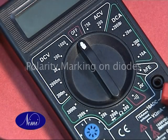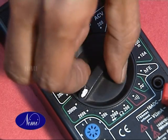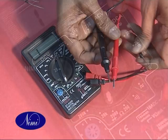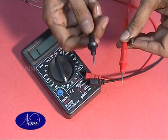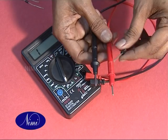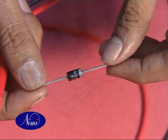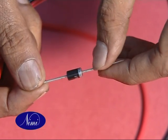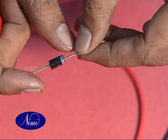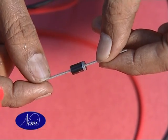For checking diodes, set the meter at the diode symbol 2000. The black probe is negative, the red probe is positive. With this we test the diode. In a diode, the ring indicates cathode, which means negative. The other side is positive, that is anode.